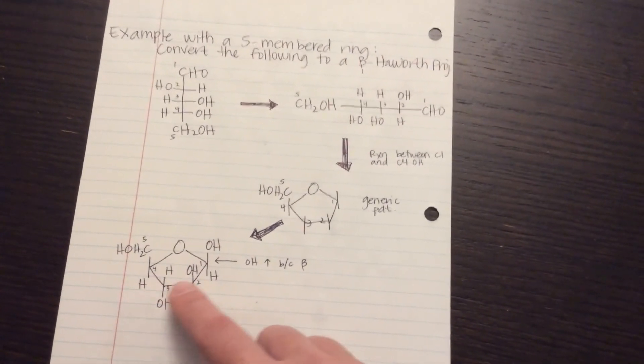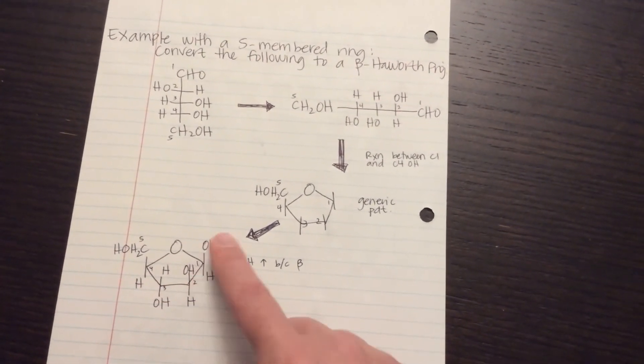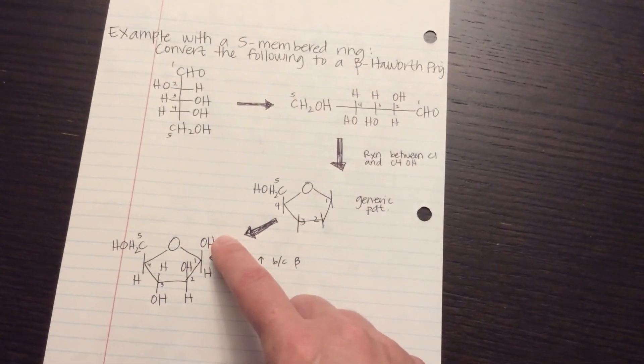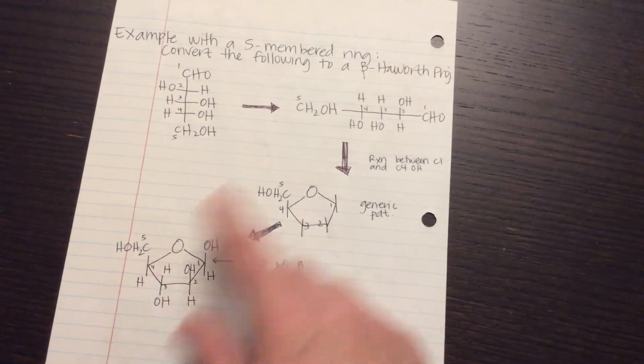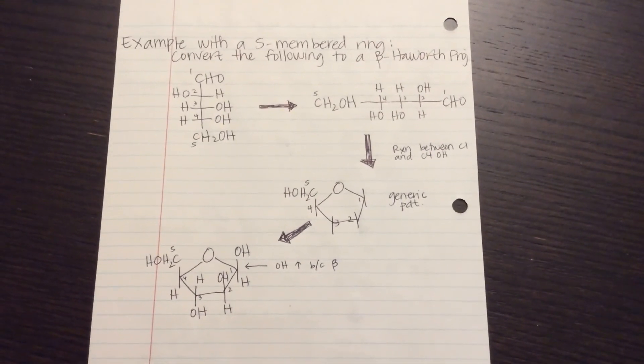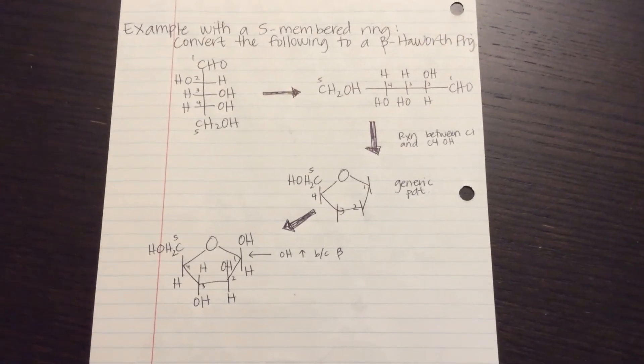How do I know what's on carbon number one? Where is it oriented? Well, the problem told me that it was beta, so that means that OH is up. And then carbon number four, all it's going to have on it is the H. I hope these two examples help you with converting between Fischer and Haworth projections.